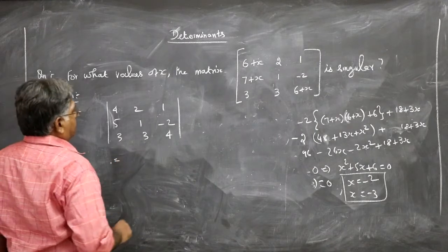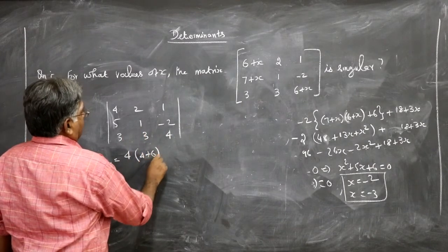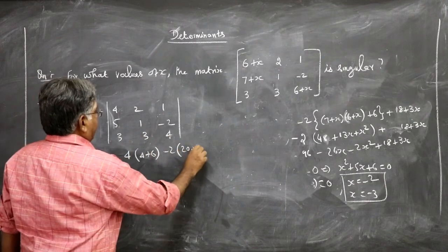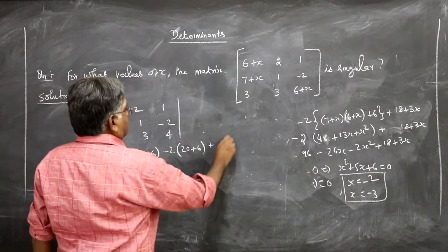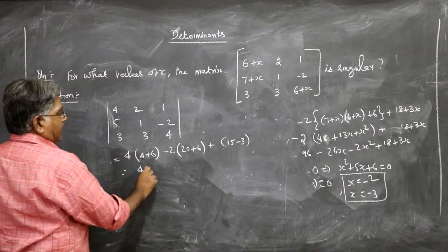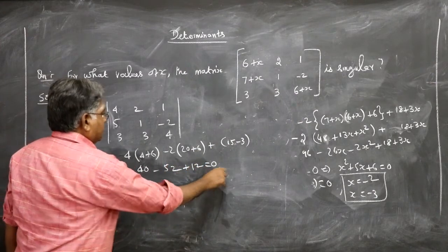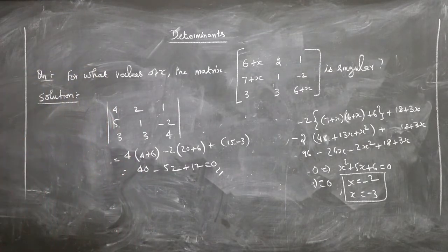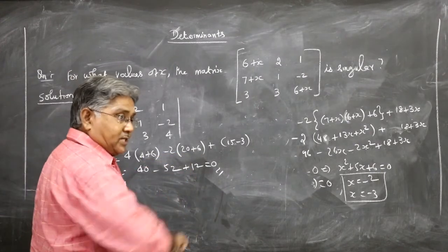Expanding for x = -2: 4 into (4+6) minus 2 into (20+6) plus 1 into (15-3) = 40 minus 52 plus 12 = 0. So the determinant becomes 0 when x = -2. Now put x = -3 and check whether the determinant also becomes 0.